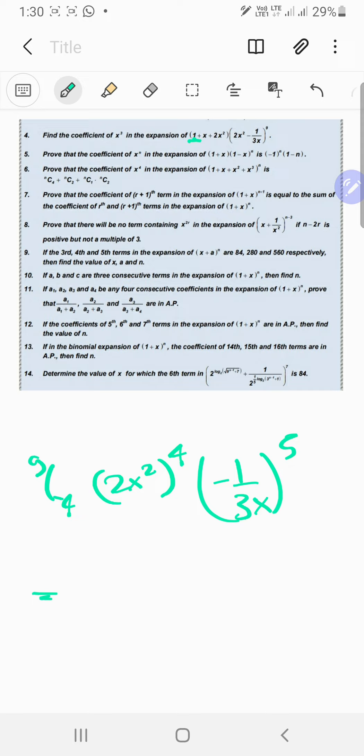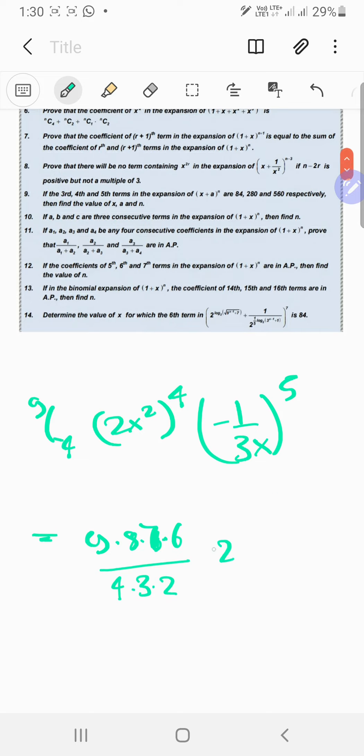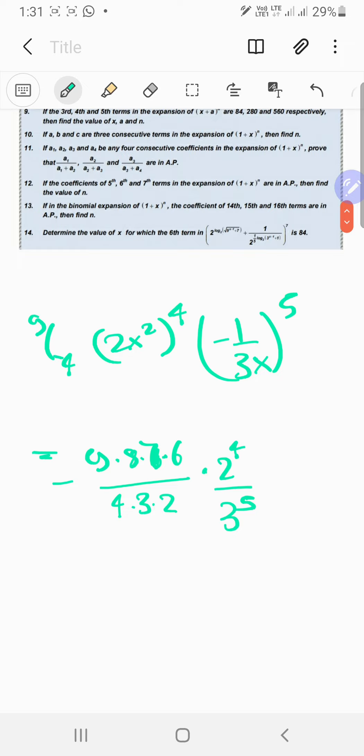So we wanted x cubed, this would be 8 minus 5, which is 3, that's correct. So you're going to get like 9 into 8 into 7 into 6 upon 4 into 3 into 2, and over here you will get like 2^4 upon 3^5, and everything is in negative. Well, this is like 3², so this is going to be 3³.